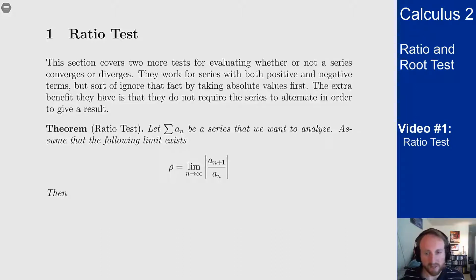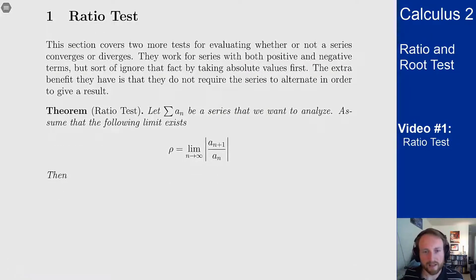Let's look at the test, we'll talk about what it does and how it works. So let's let a_n be the series we're trying to analyze. We want to see if this series converges or diverges, and to do so we need to assume that a certain limit exists. And since it's called the ratio test we want the limit of the ratios of consecutive terms of the series.